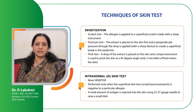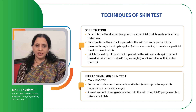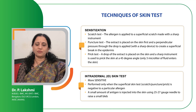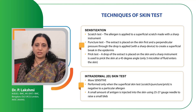What is the technique of the skin prick test? There are many varieties, but most of us follow the standard skin prick test. A drop of the allergen extract is placed on the skin and a sharp instrument or lancet is used to make a prick at a 45-degree angle. Just about 3 microliters of fluid enters the skin, and you have to wait for about 15 minutes after introduction of various allergens and wait for the wheal and flare reaction.